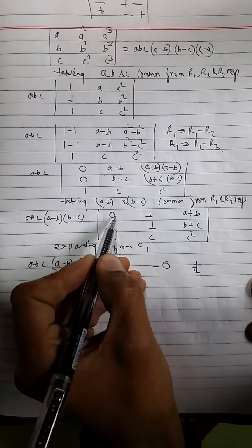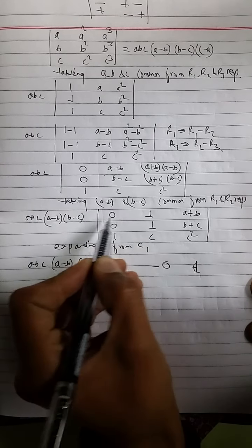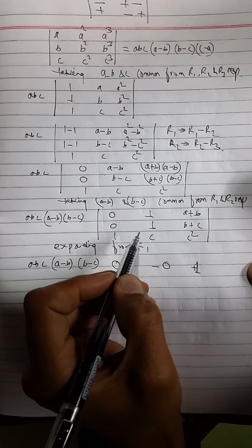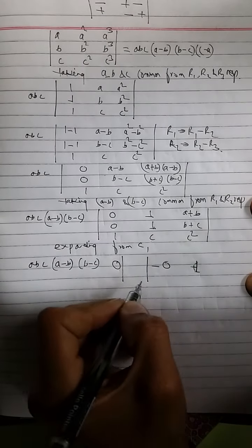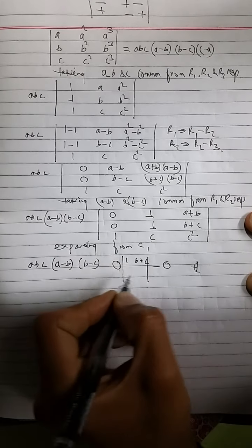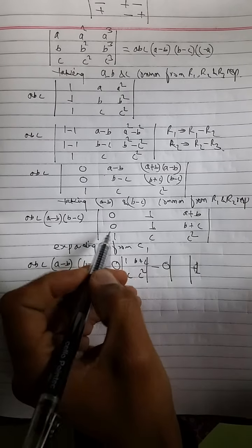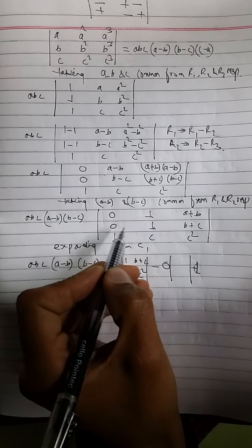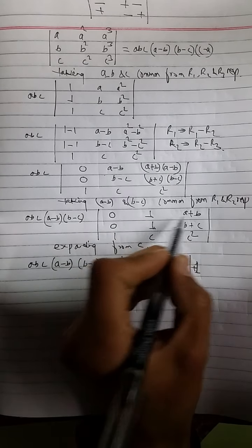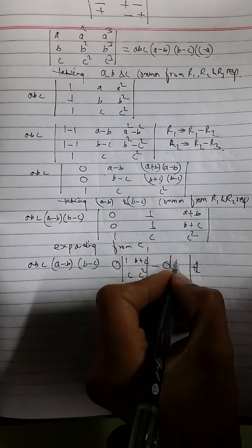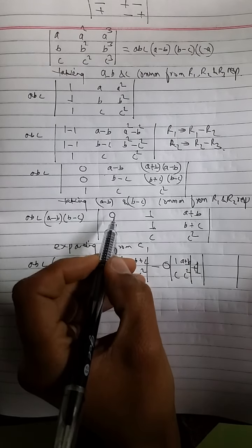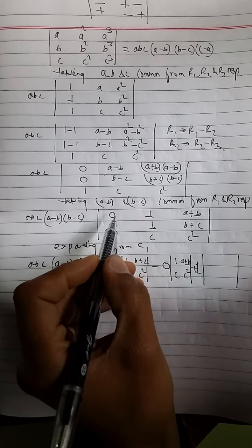This value 0 is element A11, the intersection of first row and first column. And remaining elements besides these elements of these row and column are 1, B plus C and C square. So 0 gets multiplied with determinant 1, B plus C, C and C square. And now for 0, this 0 is element A21 which is intersection of column first and row second. Left over elements are 1, A plus B, C and C square. And for the last one, element 1 is A31, the intersecting point of column first and row third. Left over elements are 1, A plus B, 1 and B plus C.